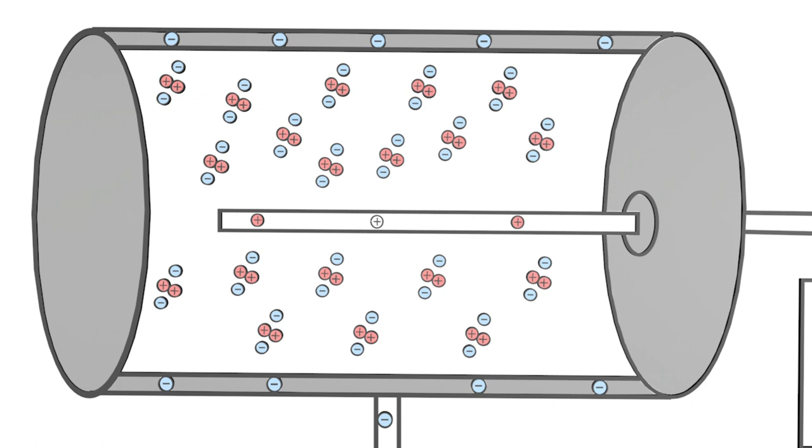Let us assume that beta-minus radiation, that is an electron, flies through the very thin window into the cylinder. This then hits a noble gas atom and knocks an electron of this atom out of the atomic shell.